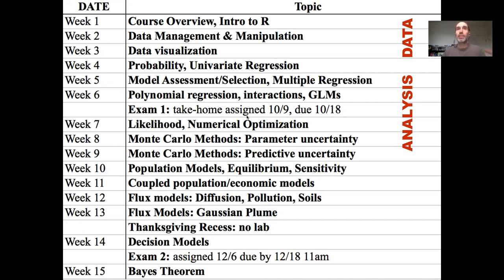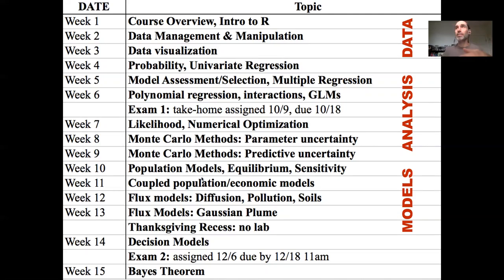From there we'll move on to more advanced statistical modeling. In the last part of the class we're going to hopefully seamlessly transition from statistical modeling to more process-based modeling — looking at population models, coupled population-economic models, and models for fluxes or the movement of things across space in terms of diffusion, pollution, soil, and related topics. We'll wrap up the end of the semester talking about how we use models in decision-making, and finally have a brief primer on Bayes' theorem and Bayesian statistics.